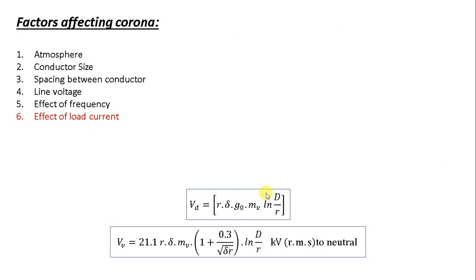Last but not least is the effect of load current. The flow of load current increases the temperature of the conductor and prevents deposition of snow on the conductor surface, which reduces corona. Load current increases the conductor temperature, which increases delta, and if delta increases, Vd and Vv increase. In that way load current affects the value of corona.